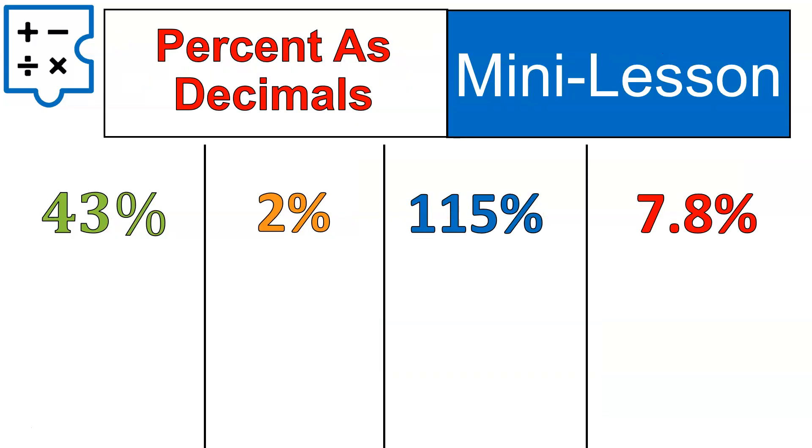Here are some percents that we are going to write as decimals. Every percentage you see there, we're going to convert into a decimal. The first one is actually probably the easiest. 43% would be written as 0.43. We can also, and it's often written as simply .43 without the zero there. You can get rid of the zero if it's on the left of the decimal, but everything on the right of the decimal you definitely need to keep.